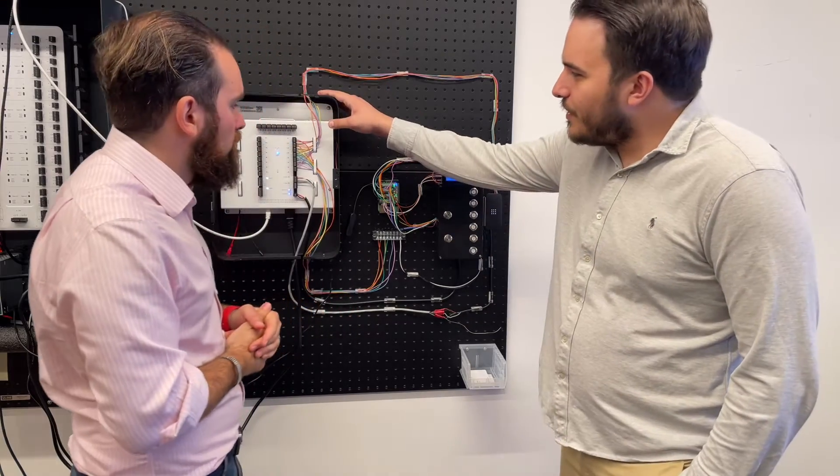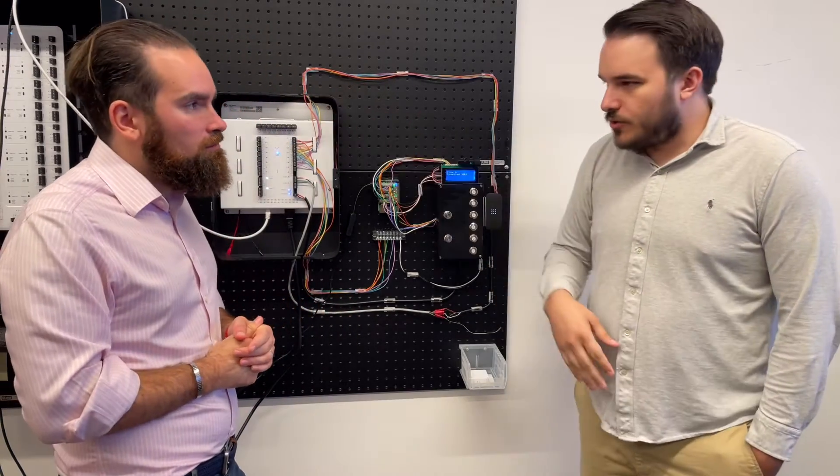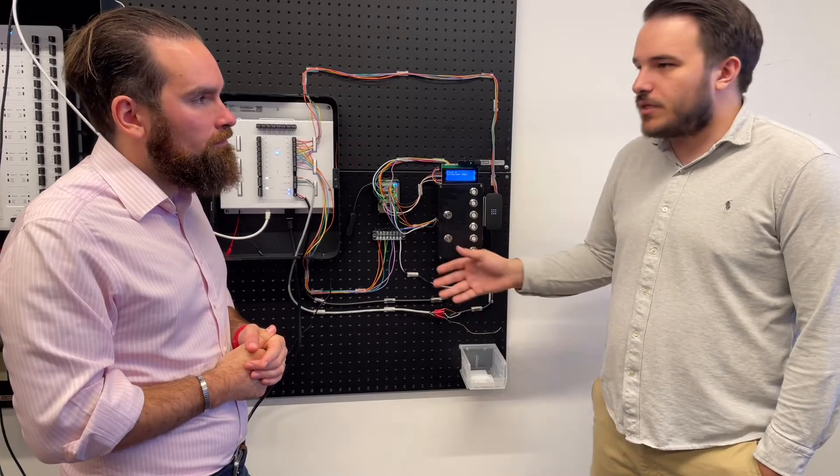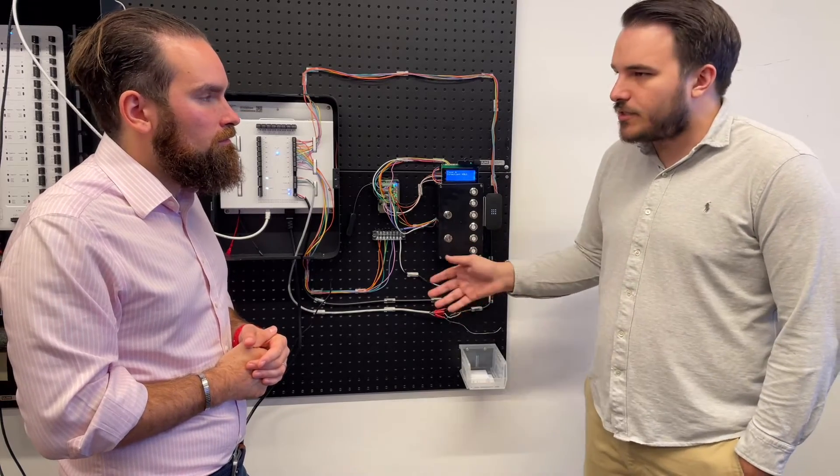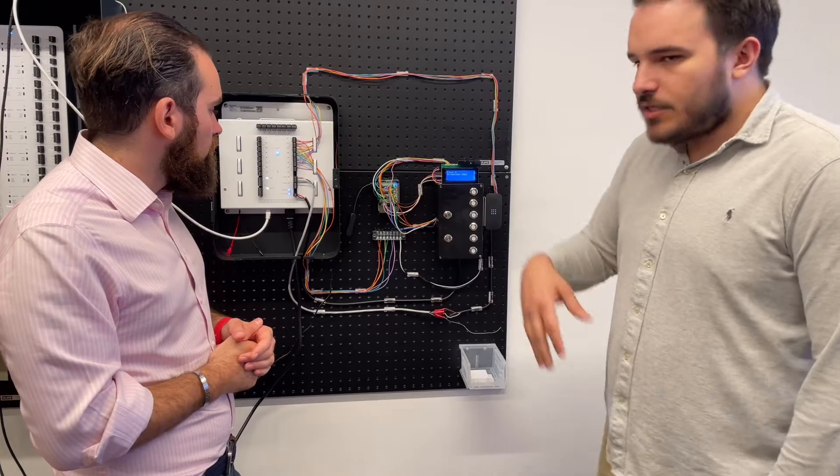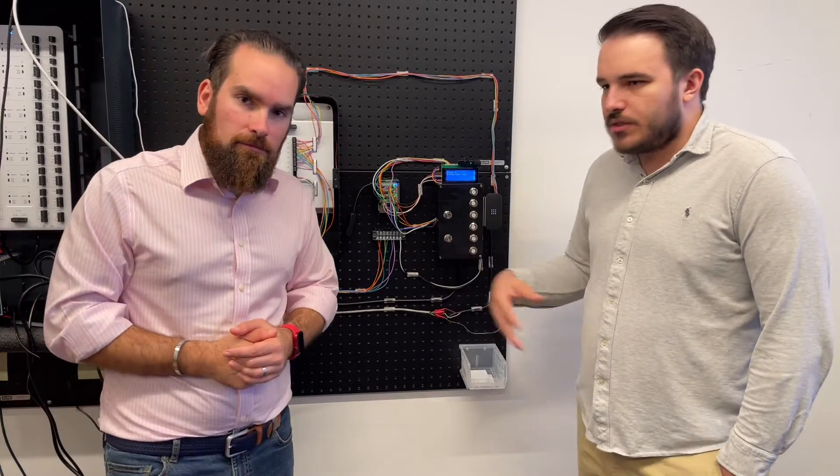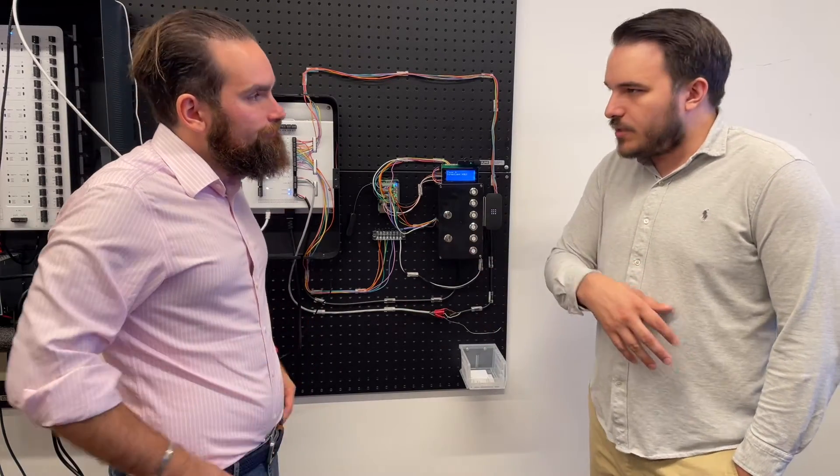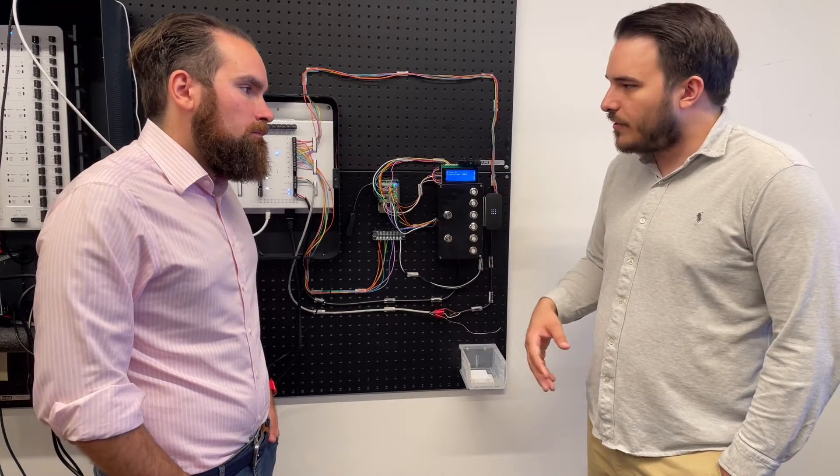The AX11 is kind of a niche device. If you look at our door controllers, obviously those are the shining stars that we're actually going to be doing things like controlling locks, taking reader inputs, and that sort of thing. But a lot of times you have these kind of auxiliary applications. Common ones might be panic buttons, outputs for lockdowns, for strobes and sirens, and that sort of thing.